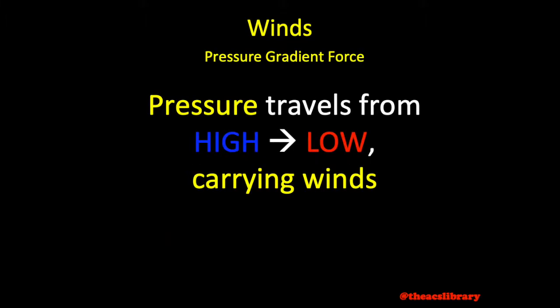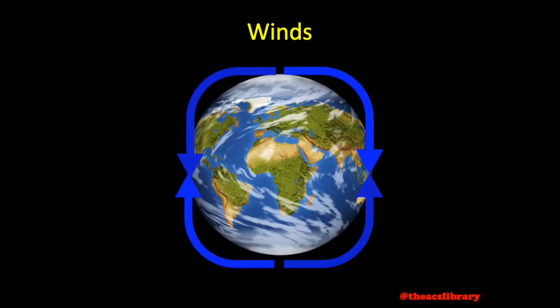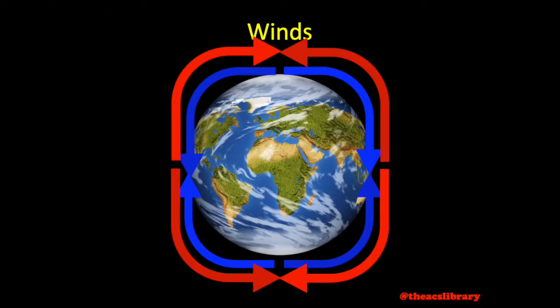Pressure always moves from areas of high pressure to low pressure. Because of this, there is a force known as pressure gradient force which travels perpendicularly across isobars from high to low pressure areas. If this were the only force in effect, the colder, denser air of the poles would be carried towards the equator, heat up, rise, and be pushed back to the poles, creating two huge circulating convective currents.